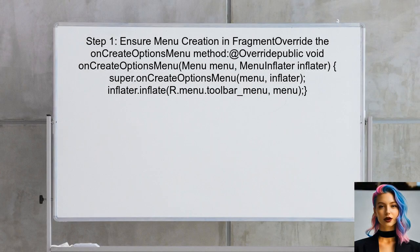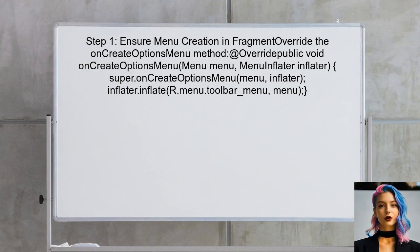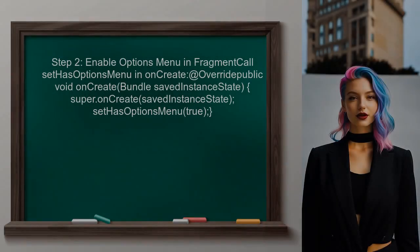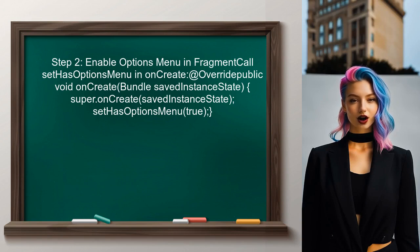To address the issue of menu items not displaying correctly in the first fragment, you should first ensure that the menu is being created properly in the fragment's lifecycle. This can be done by overriding the onCreateOptionsMenu method. Next, check if the setHasOptionsMenu method is called in the fragment's onCreate method. This ensures that the fragment can contribute to the options menu.